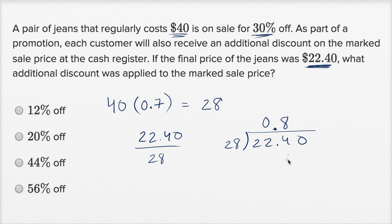Eight times eight is 64. Eight times two is 16, plus six is 22. No remainder. So this is 80% of the marked down price.